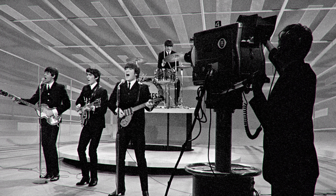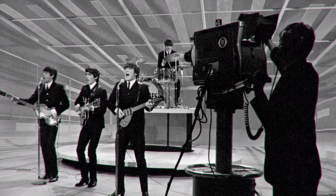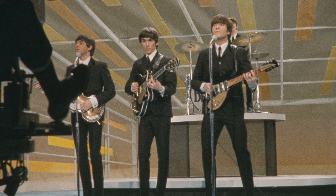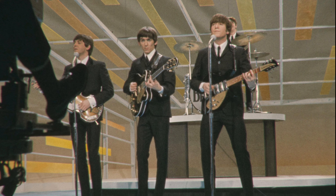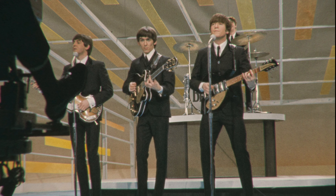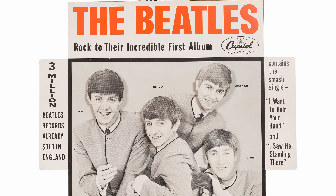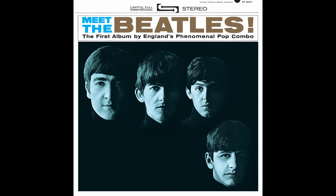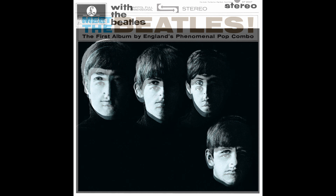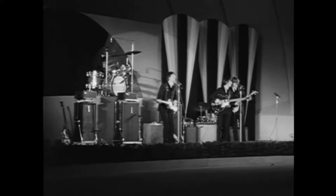On the 9th of February 1964, the Beatles would perform on the Ed Sullivan Show for 70 million live viewers, which was almost 50% of the population that owned a TV in 1964. 20 days before, Capitol Records would release their first American album on their label, Meet the Beatles, which looked a little different than the original UK version. Today, we're going to be looking at the differences in the albums and why they were different.